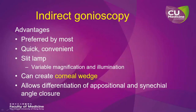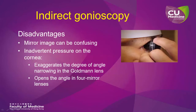The advantage of indirect gonioscopy is that it is very quick and convenient to perform. It can be done at the slit lamp, which allows variable magnification and illumination, and it also allows the creation of a corneal wedge. Indirect gonioscopy also allows the differentiation of appositional and synechial angle closure through indentation techniques. The disadvantage includes the fact that you are looking at a mirror image, which can sometimes be confusing. Also, inadvertent pressure on the cornea can make the width of the drainage angle misleading — a larger Goldman lens may exaggerate angle narrowing, while a four-mirror lens with a smaller contact area may inadvertently open up the drainage angle.